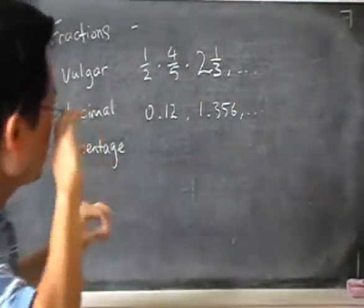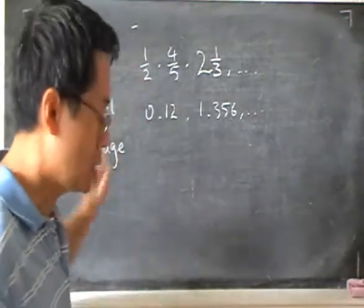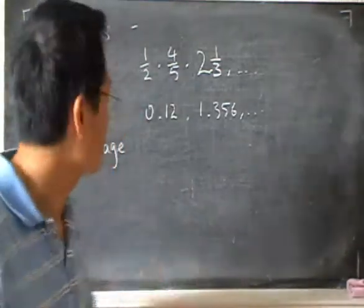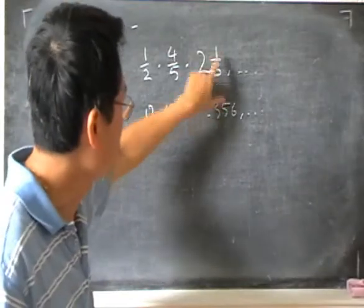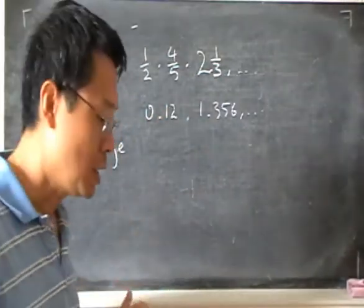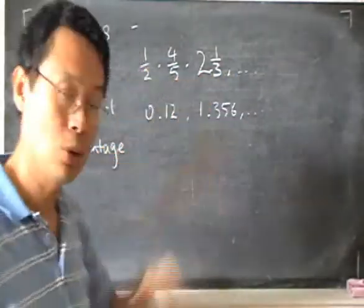So for example, if I look at this fraction, this 1 over 2. 1 over 2 is half and it is a number that is between 0 and 1. So this number 2 and 1 third, that's a kind of fraction, and it's a number that's in between 2 and 3. So none of these are whole numbers.